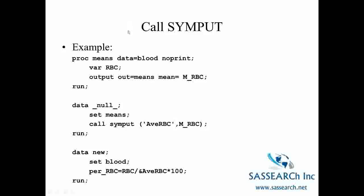Suppose you ran proc means to compute the mean red blood cells for a group of patients and you wanted to compare individual patient values against the mean red blood cell value. In this first bit of code we are creating an output data set called means, and it consists of just one observation and one variable — the total mean RBC for this group of patients from the data set blood. This output data set means is going to have one variable on it: M_RBC, which is the mean red blood cell count for this group of patients.